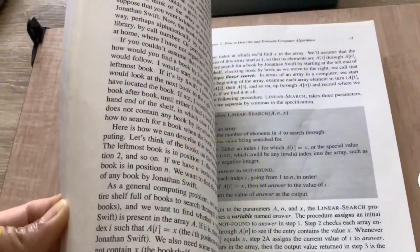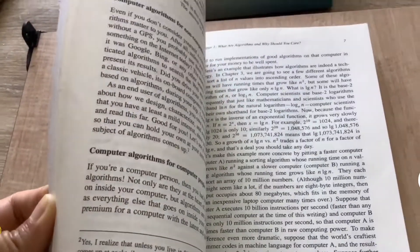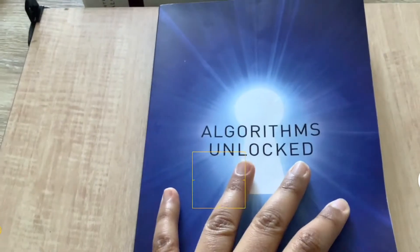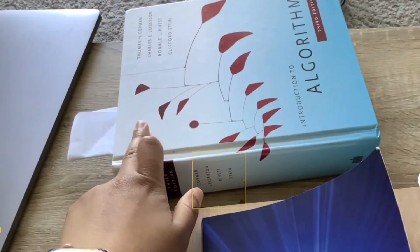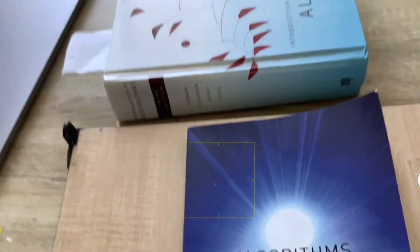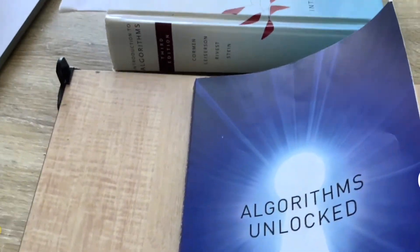Yeah, and I'll leave a link for the book in the description, and yeah, so that's pretty much it for this Algorithm Unlocked. If you want an easier version than Algorithm's Introduction to Algorithm book, definitely pick it up. Yeah, thanks for watching, and see you on the next one. Bye!